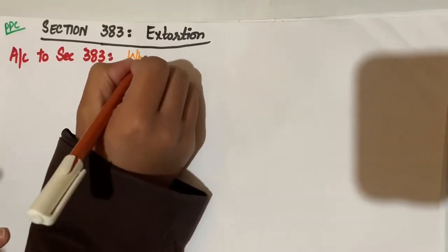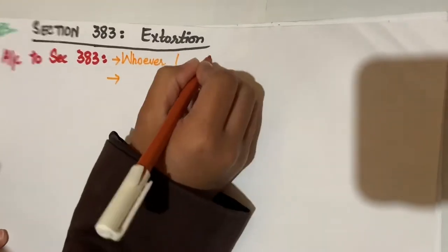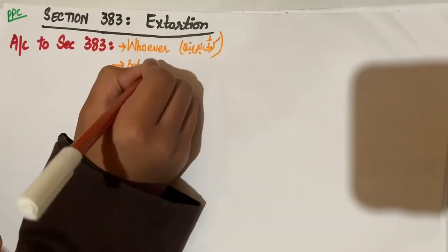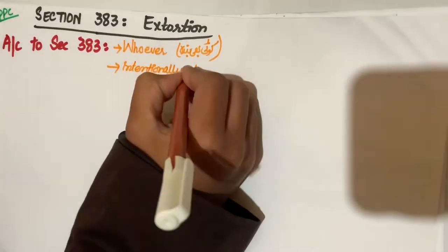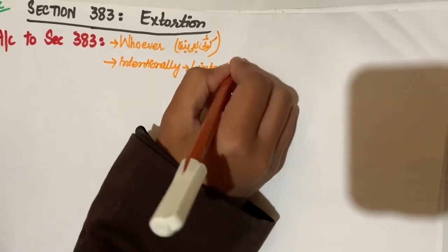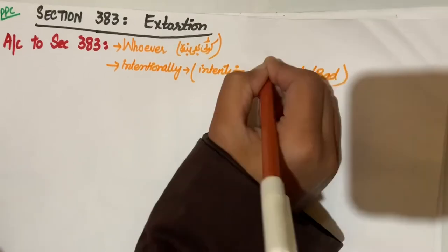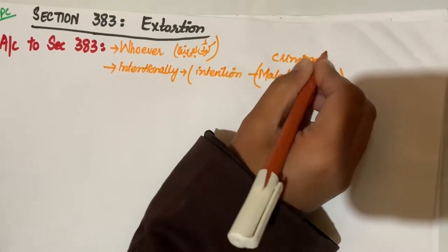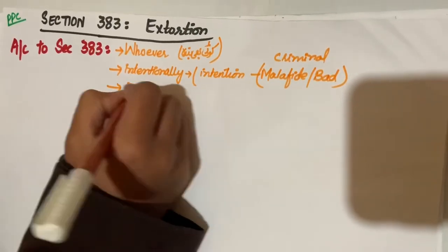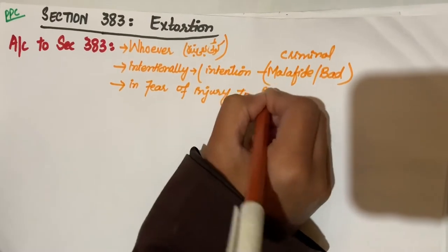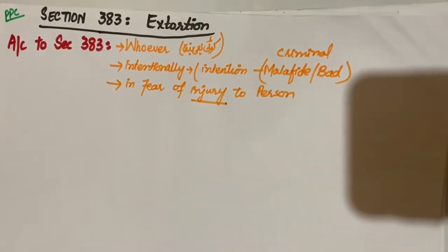So according to Section 383, whoever means koi banda, intentionally - abhi yahan ki intention kis qisam ki jati hai - malafide intention, bad intention, criminal intention, kharab niyat, buri niyat. So intentionally wo kya karta hai, puts any person in the fear of injury to that person. Yahan kya cause kar raha hai wo - fear of injury.